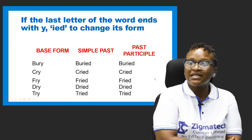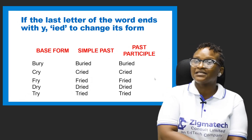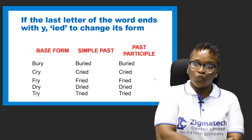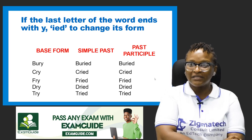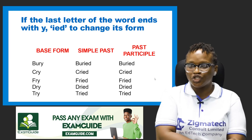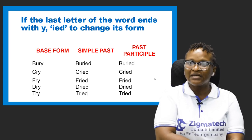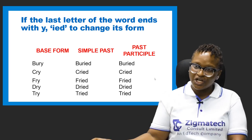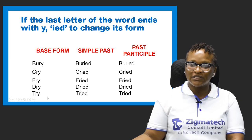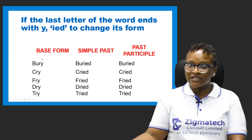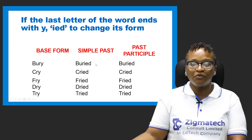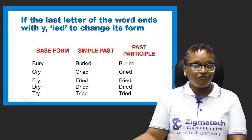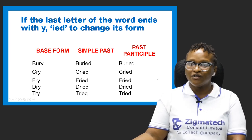If the last letter of the word ends with Y, I-E-D is added to change its form. So you have the word 'bury' — these words end with Y and as such I-E-D will be added to all of these words to form the past and past participle. So we have: buried, cried, tried.